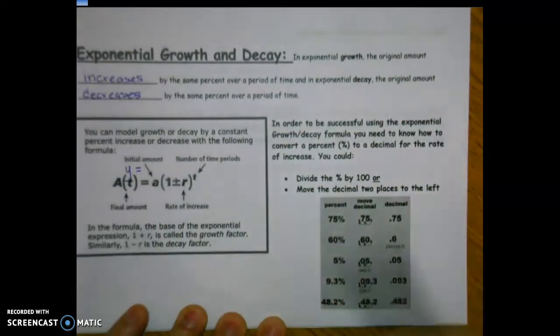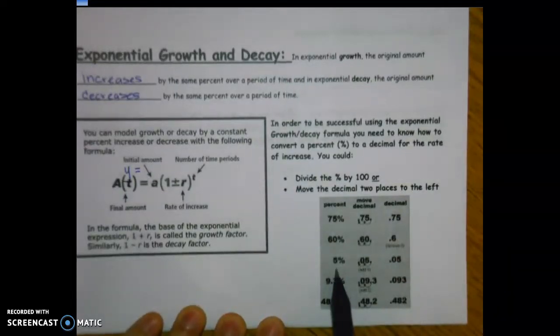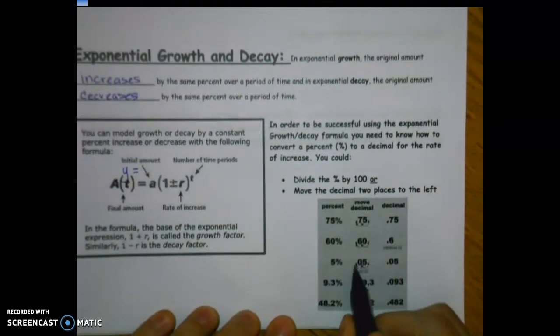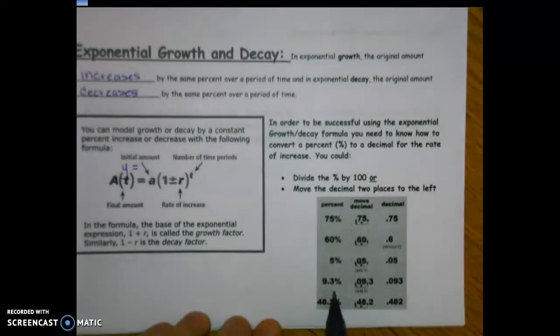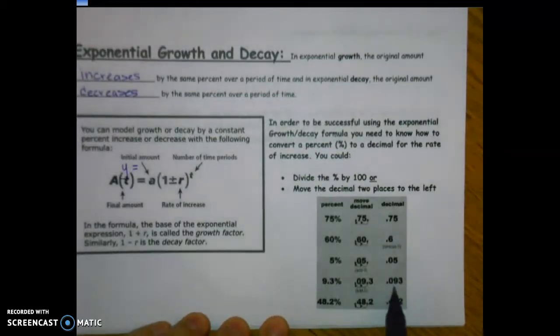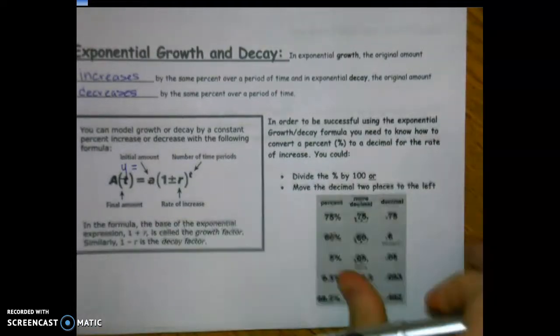If you have 60%, move the decimal two places and it becomes 0.6. For 5%, move it two places — there's nothing there so add a zero as a placeholder — giving 0.05. For a decimal percent like 9.3%, move two places to get 0.093. And 48.2% becomes 0.482.